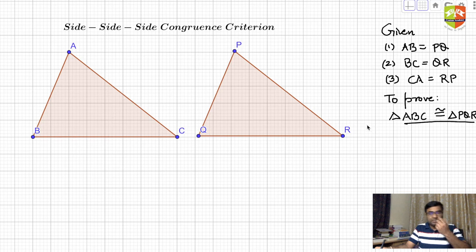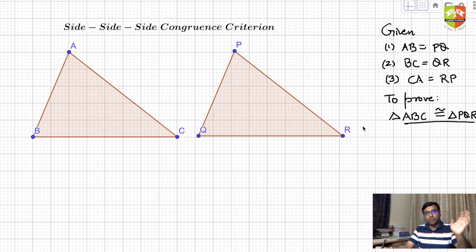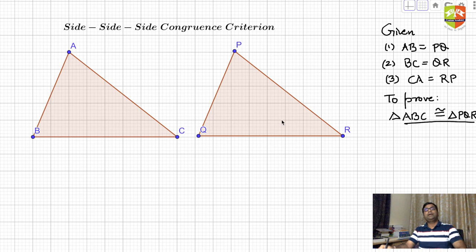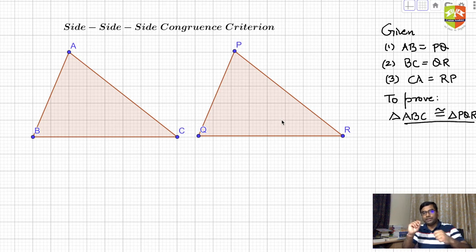For this proof, since no angle is mentioned, we need to bring in an angle somehow. The two congruence criteria we have studied so far are SAS (which involves an included angle) and ASA (which involves two angles). Here there is no angle at all, so we need to bring the concept of an angle in. If we can prove any one corresponding angle is equal — say angle A equals angle P, or B equals Q, or C equals R — then since all three sides are equal, it will fit the SAS scheme.